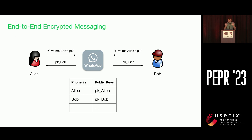At this point, it's really important for the security of the session that WhatsApp actually gives the correct public key corresponding to Bob. For instance, if WhatsApp were to give a public key corresponding to some other private key that they've already generated, then this would effectively allow the server to run a man-in-the-middle attack on the session between Alice and Bob.